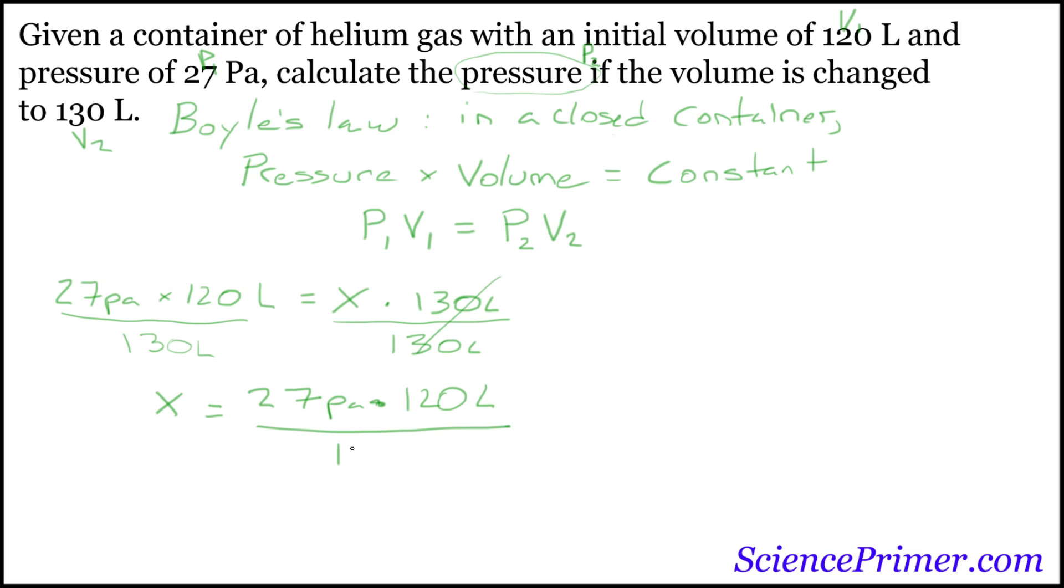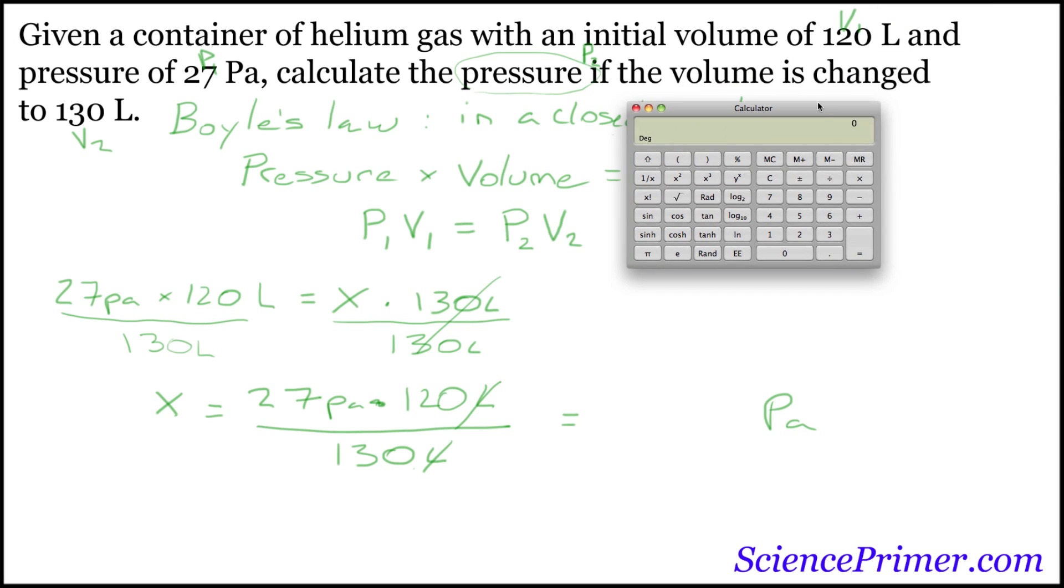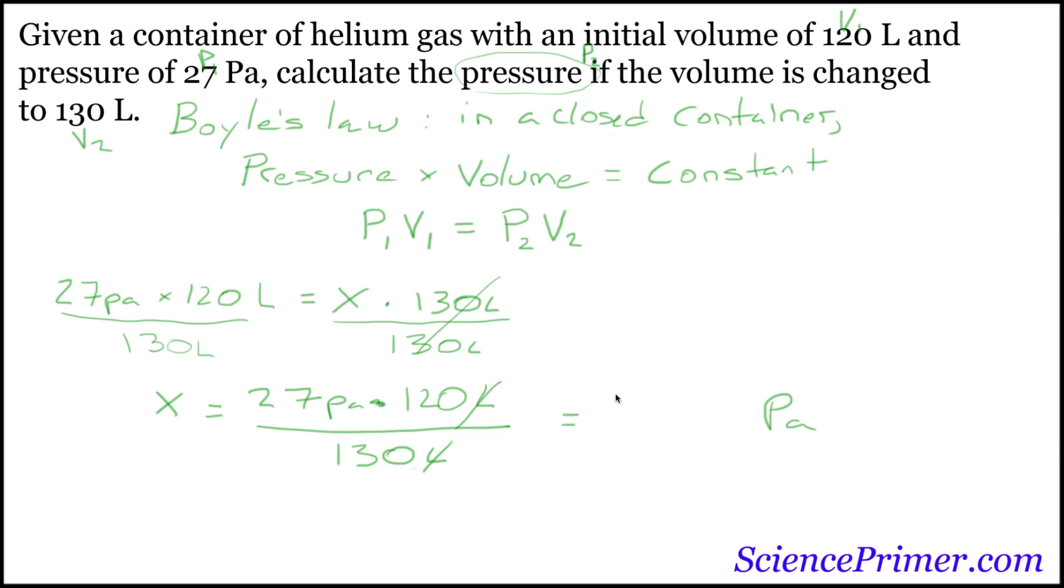divided by 130 liters. So we'll do the calculation, 27 times 120 divided by 130 equals 24.9, or 25 pascals. So this is the new pressure given the change in volume in the container of helium gas.